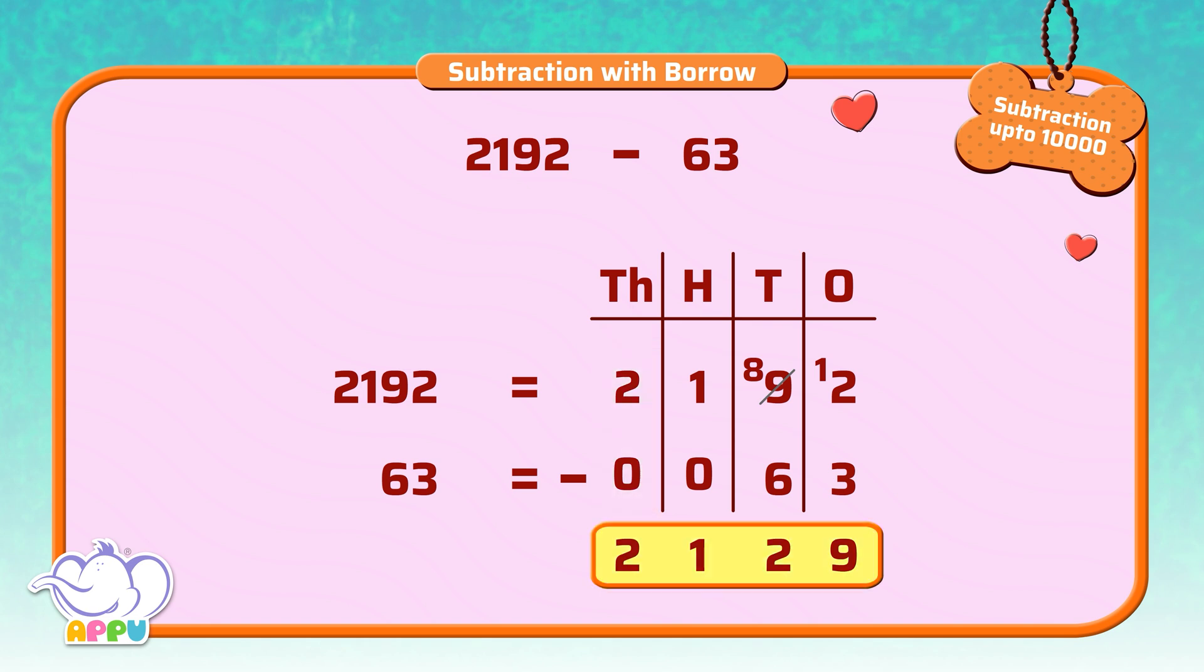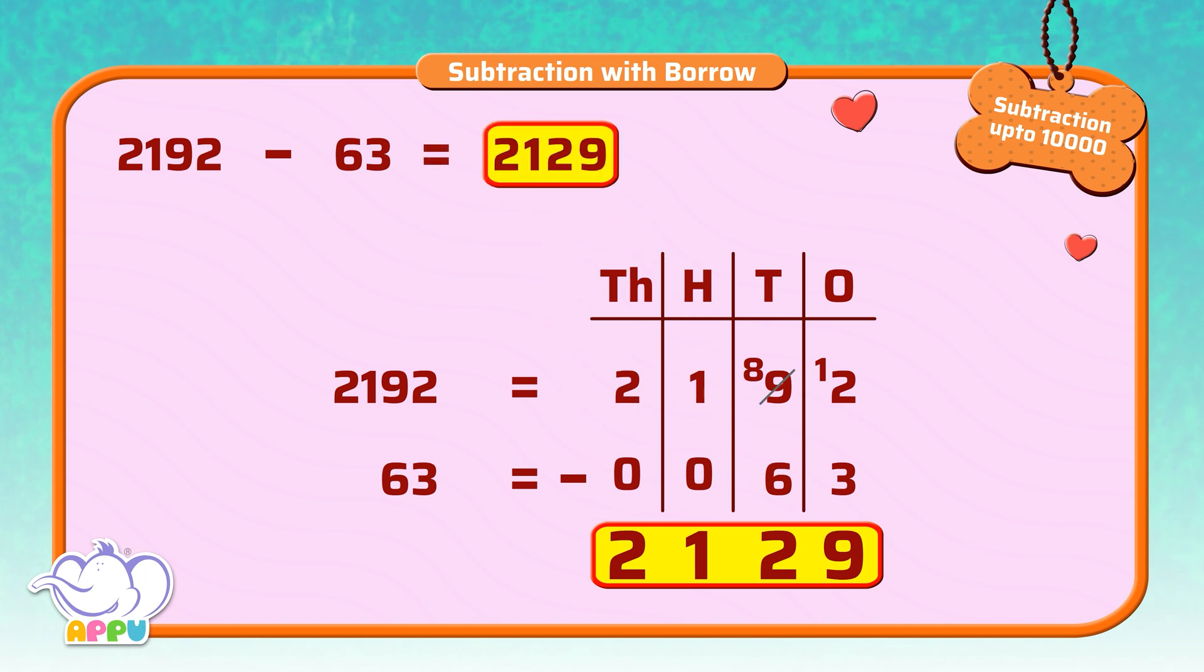The answer is 2,129. So 2,192 minus 63 is equal to 2,129. Excellent!